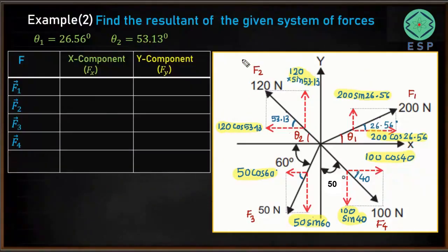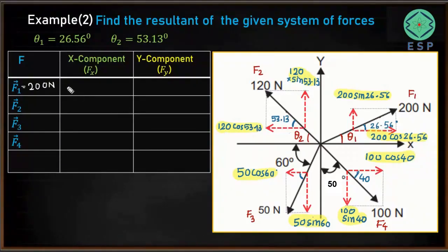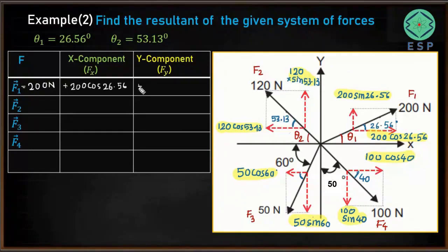Now we'll write down all forces and their components along x and y. For F1 (200 Newton), its x component is 200 cos 26.56 — it acts towards the right (positive x direction), so it is positive: +200 cos 26.56. The y component is 200 sin 26.56 — acting in the positive y direction, so also positive: +200 sin 26.56.